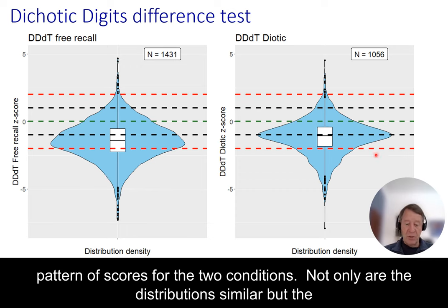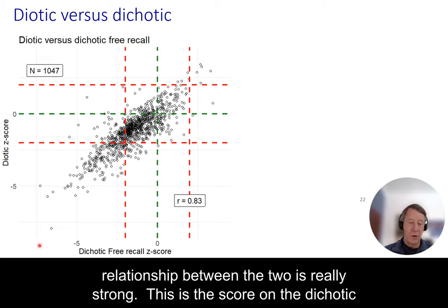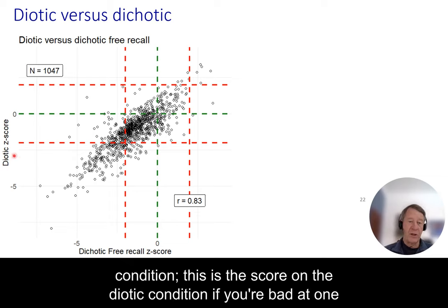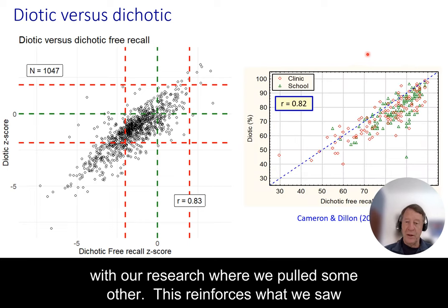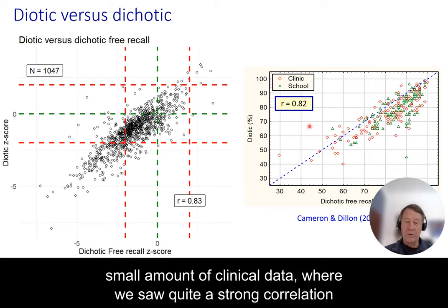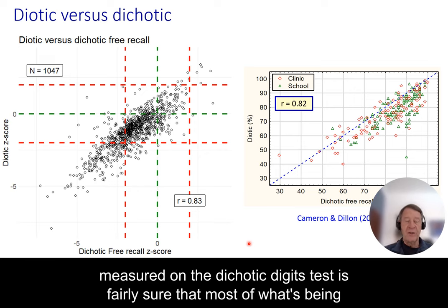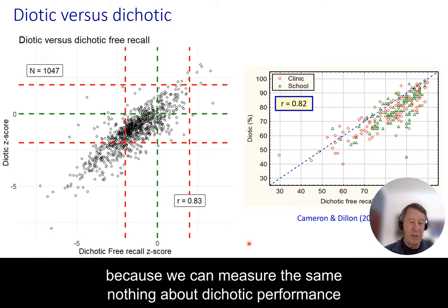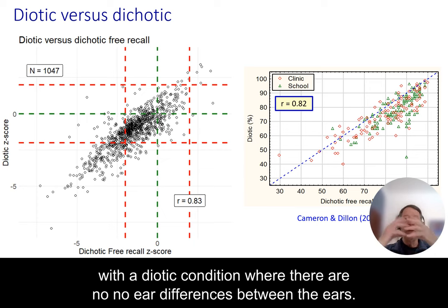Not only are the distributions similar, but the relationship between the dichotic and diotic scores is really strong — if you're bad at one, you're almost always equally bad at the other. This reinforces what we saw in our research where we pulled some children out of school and got a small amount of clinical data, showing again a strong correlation between the two sets of scores. I'm fairly sure that most of what's being measured on the dichotic digits test is not about dichotic performance, because we can measure the same result in most cases with a diotic condition where there are no differences between the ears.